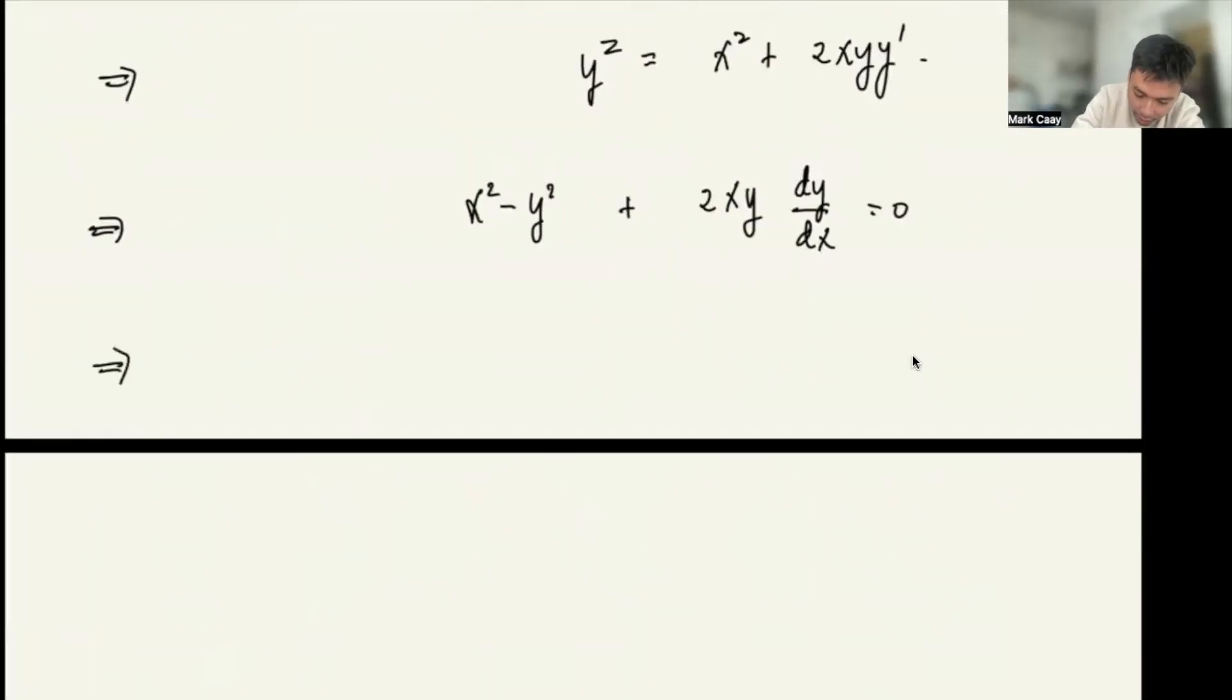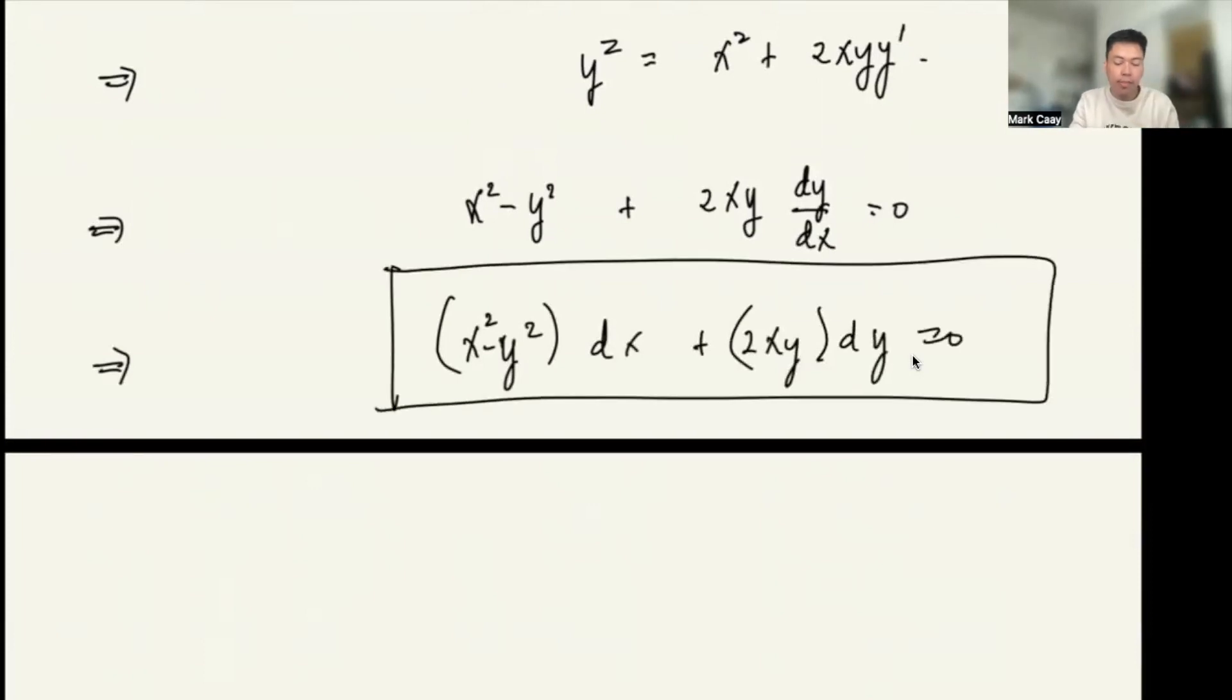equals x squared plus 2xy y prime. Simplifying, I get x squared minus y squared plus 2xy dy/dx equals zero. Hence, I have x squared minus y squared dx plus 2xy dy equals zero. I multiplied both sides by dx. So that is the elimination of arbitrary constant. That's it. If you have any questions or clarifications, please let me know.